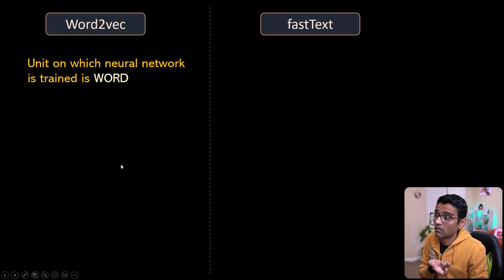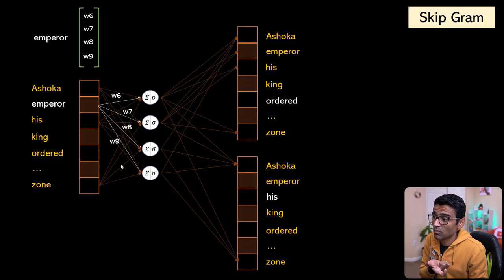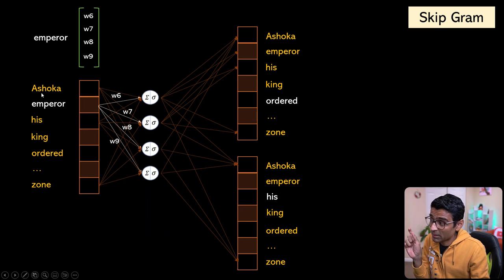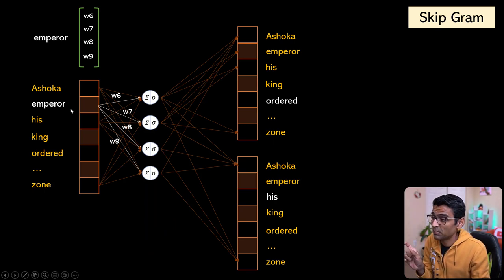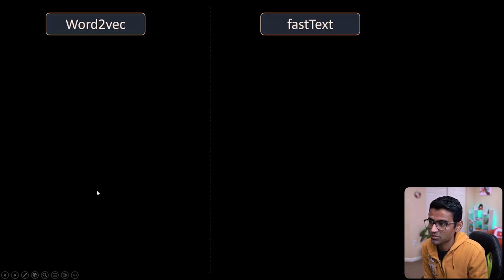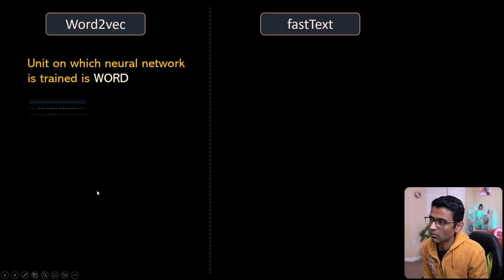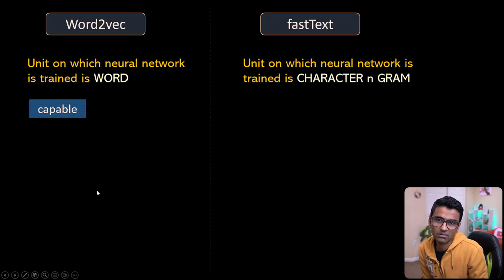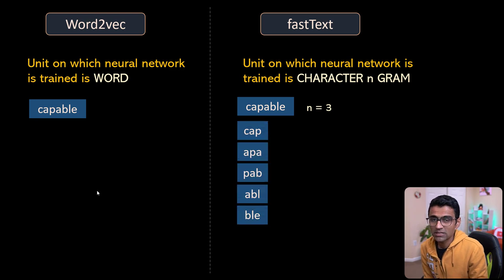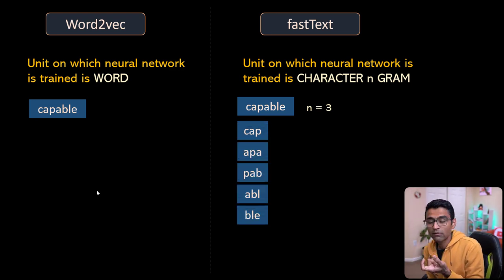This means when you have the word 'capable', instead of using the whole word you pass those individual character n-grams like 'c-a-p', 'a-p-a', and so on. The benefit of doing this is that you are capturing fine-level, more granular information.